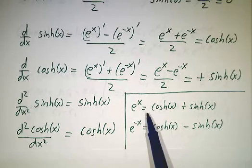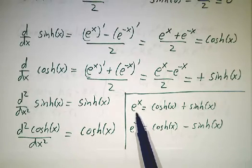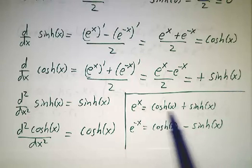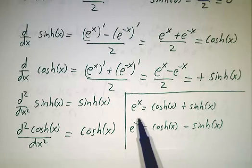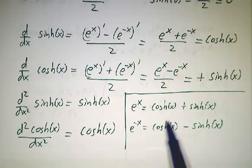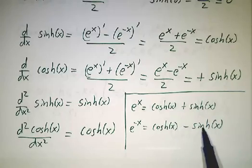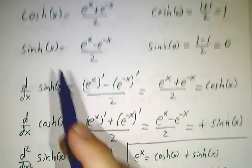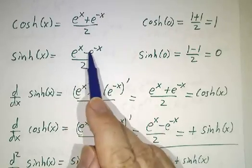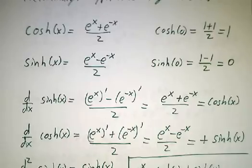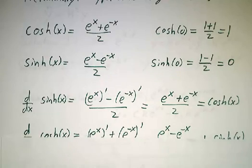You can recover e^x by taking cosh plus sinh, and e^(-x) equals cosh minus sinh. So anything written in terms of e^x and e^(-x) can be rewritten in terms of cosh and sinh, and vice versa.